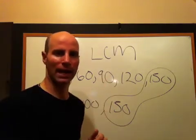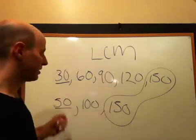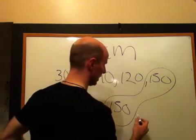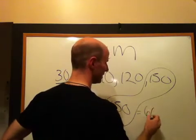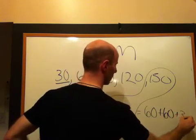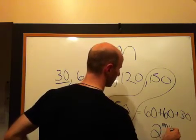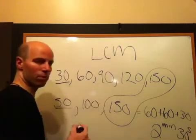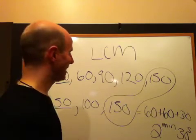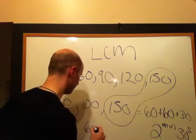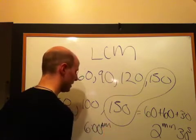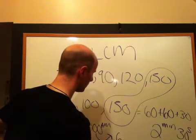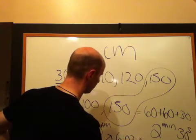Now if we go back to the problem that we had, this was 30 seconds, this was 50 seconds, they both meet back up at 150 seconds. What that's saying is, 150 seconds is equal to 60 plus 60 plus 30, or 2 minutes and 30 seconds. So if they both started this race, let's say at 6am, the next time they would be back at that track, or back at that same spot, would be 6:02 and 30 seconds.